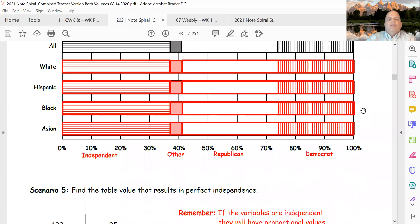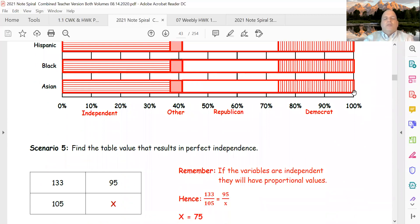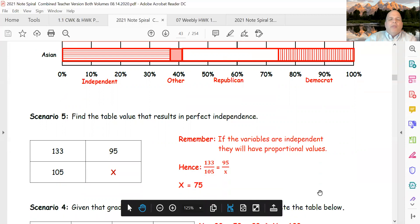The next thing says find the table value that results in perfect independence. You're like, I don't know how to do that, and I'm like, yes you do. Your middle school teacher showed you. Remember I said independence means proportion, so that's all you're doing is setting up a proportion and solving. So 105 times 95 divided by 133.